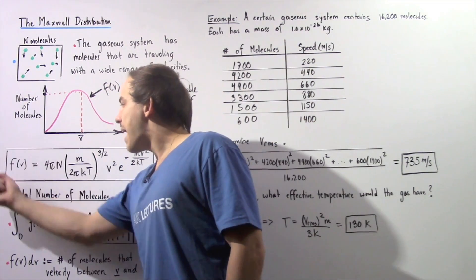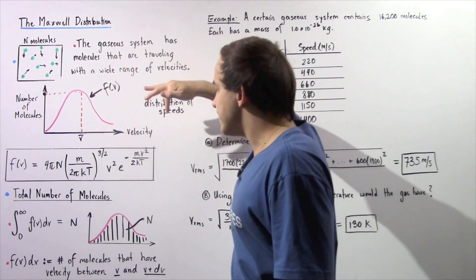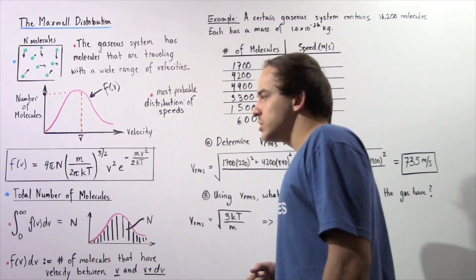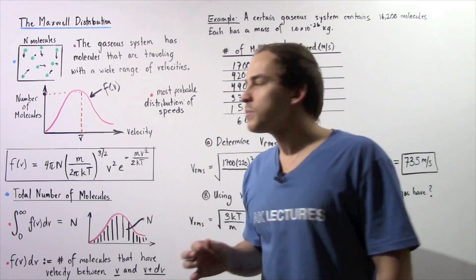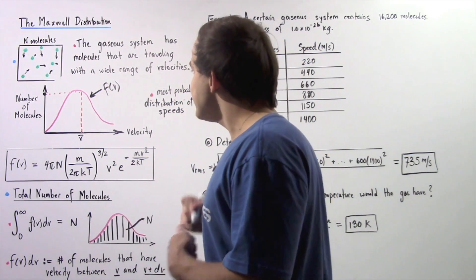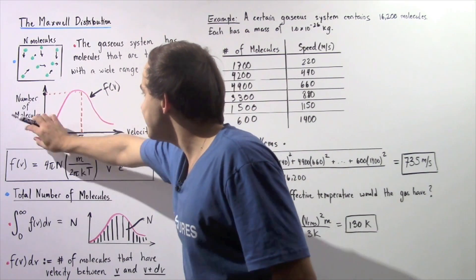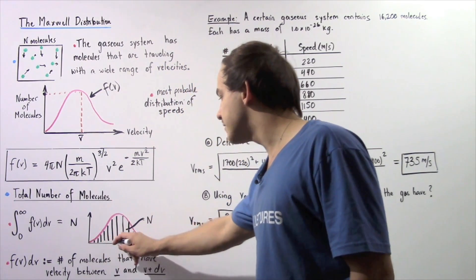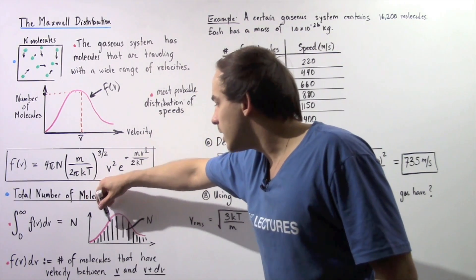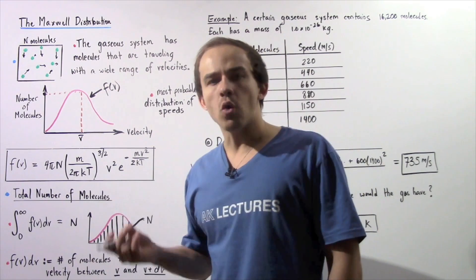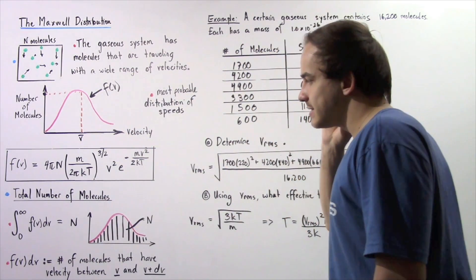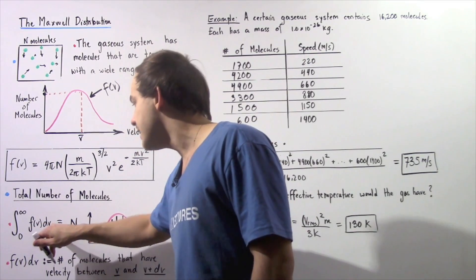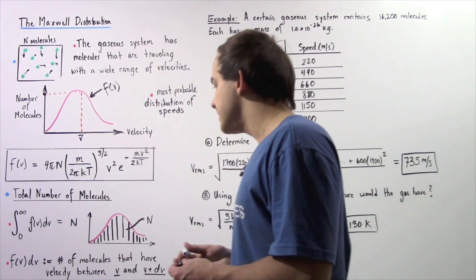We see that the Maxwell distribution of speeds is related to the temperature given in Kelvins. To calculate the total number of molecules n, we take the integral of the entire curve from zero to infinity. Integrating f(v) gives us the area under the curve, and the area under the curve gives us the total number of gas molecules inside our gaseous system: n = ∫₀^∞ f(v) dv.